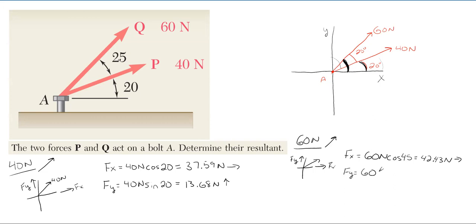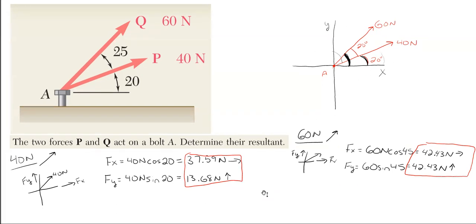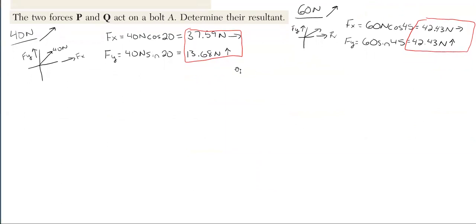Now with this particular angle of 45 degrees, it doesn't matter if you use cosine or sine because cosine and sine of 45 are exactly the same. We use cosine for X because the angle is adjacent to the X, and sine for Y because Y is opposite the angle. So we've taken our two original forces and turned them into four forces in the rectangular coordinate system — the 40 split into X and Y, and the 60 split into X and Y.